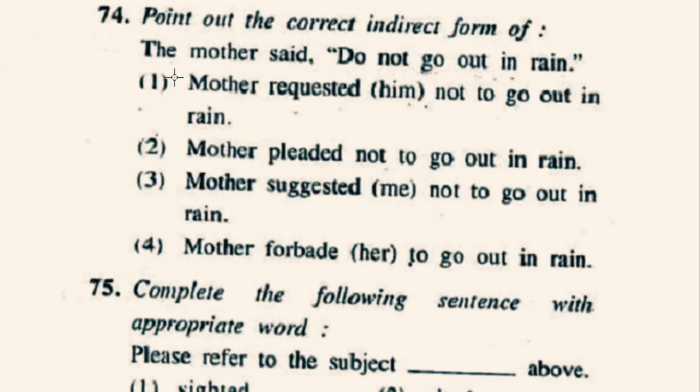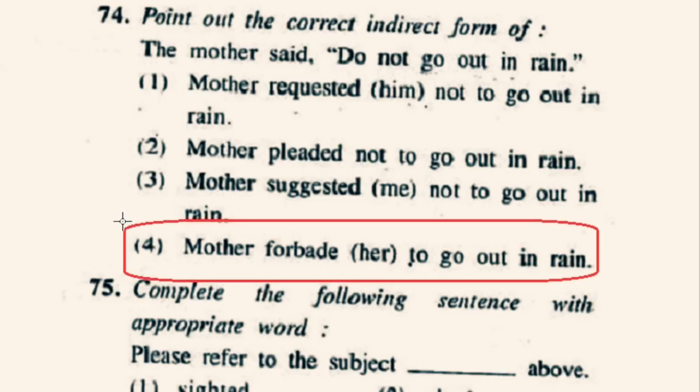Question number 74: Point out the correct indirect form of — 'The mother said, do not go out in rain.' The correct indirect form will be 4th option: Mother forbade her to go out in rain.